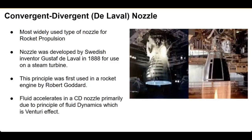Hello everyone and welcome to Layman Engineering. In this video we are going to look at how a convergent-divergent nozzle works, which is also called a de Laval nozzle. It is a very primitive design that we have been using for a long time. It is the most widely used type of nozzle for rocket propulsion. This nozzle was first developed by a Swedish inventor de Laval in 1884, first used for a steam turbine, and later for rocket propulsion by Robert Goddard in the United States.